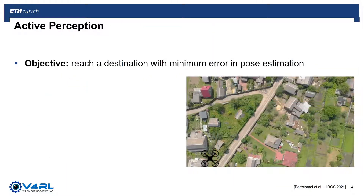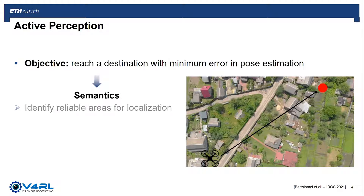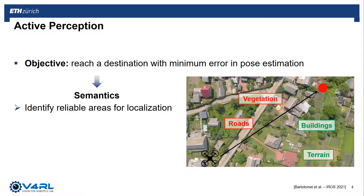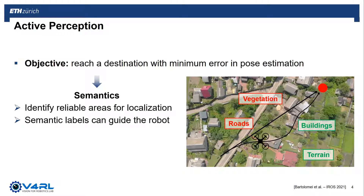In active perception, the objective is to reach a given destination while minimizing the error in pose estimates. In particular, semantics can be a valuable source of information to identify reliable areas for localization, such as buildings and terrain, and distinguish them from unreliable areas, such as woods or busy roads. Semantics can then guide the robot to reach its destination safely and accurately.